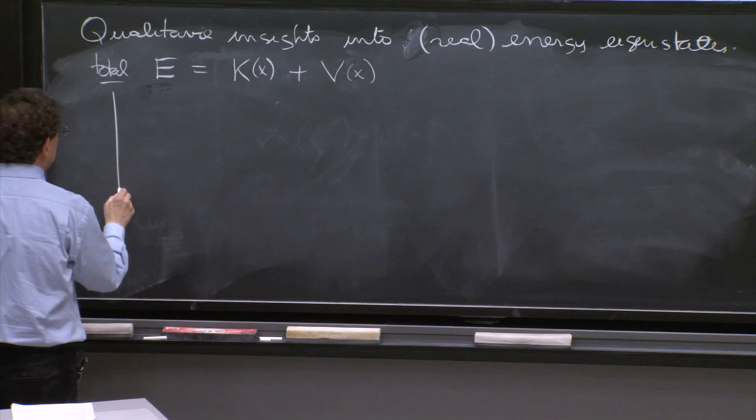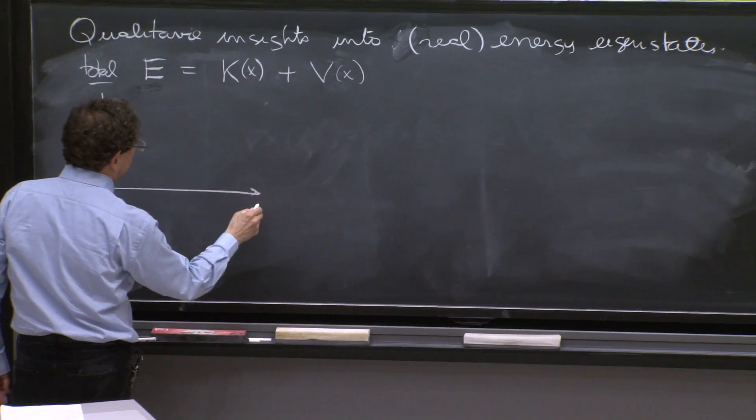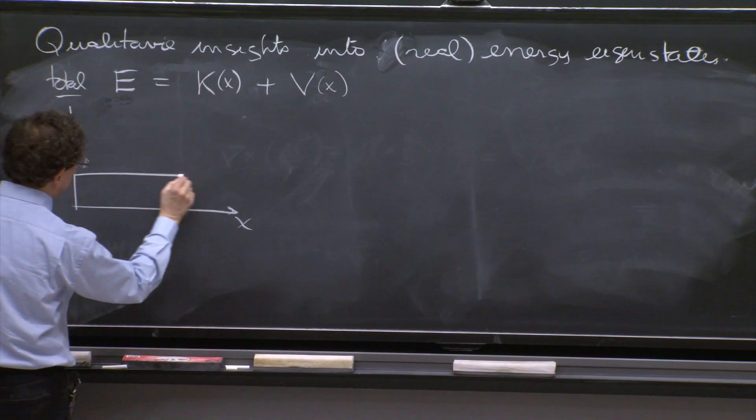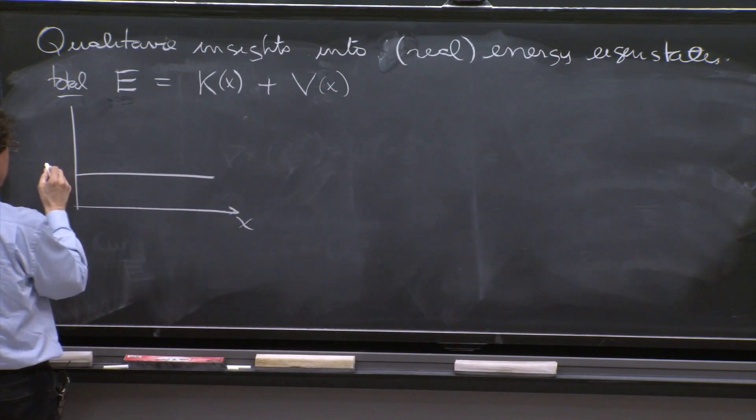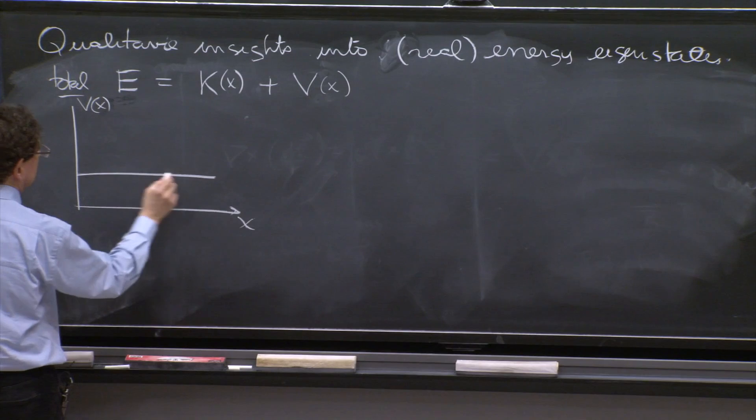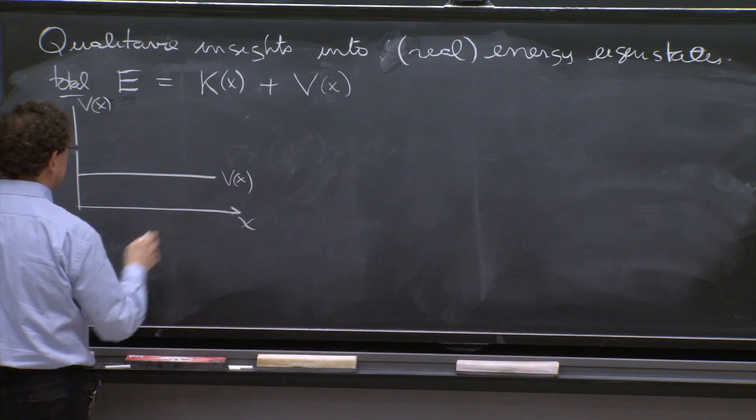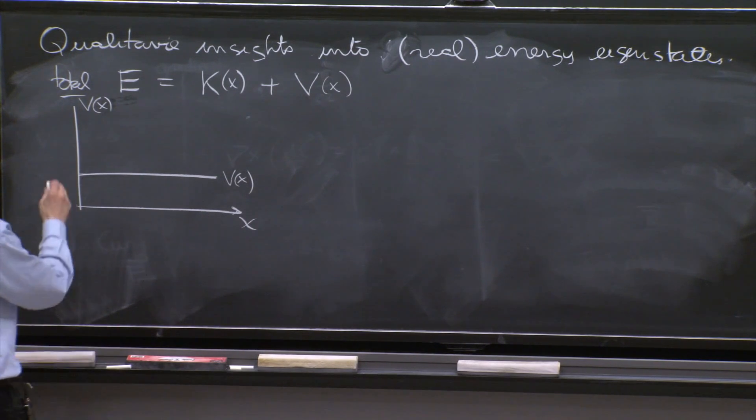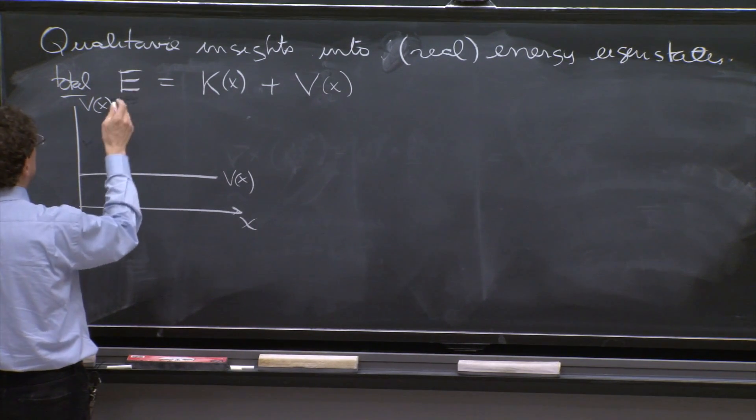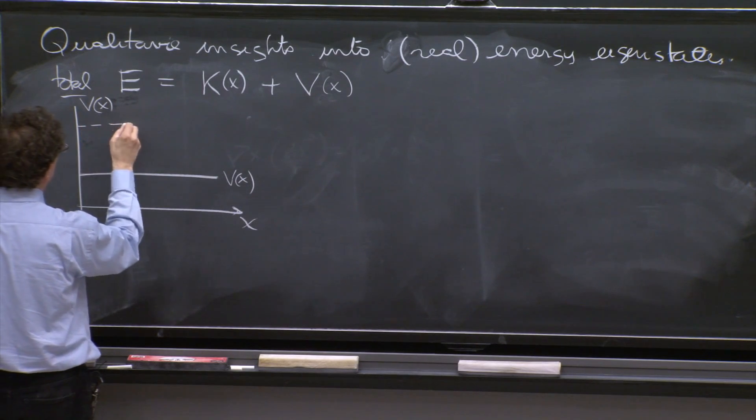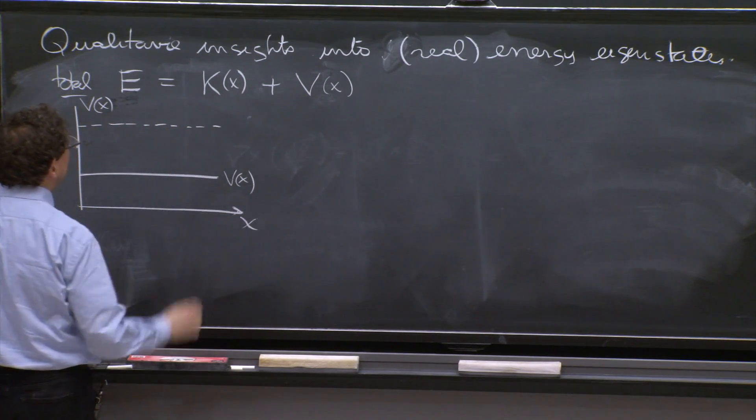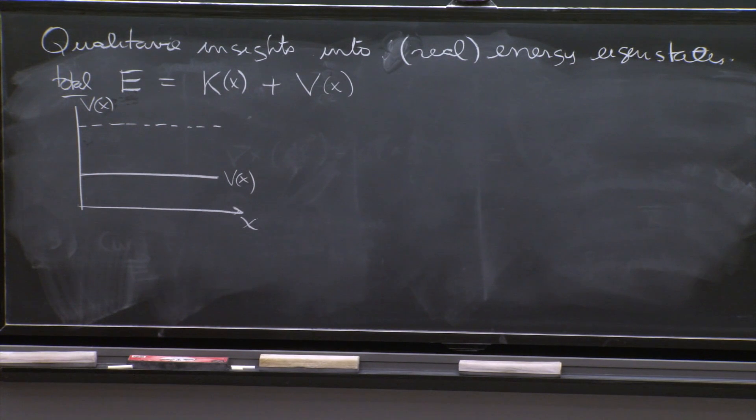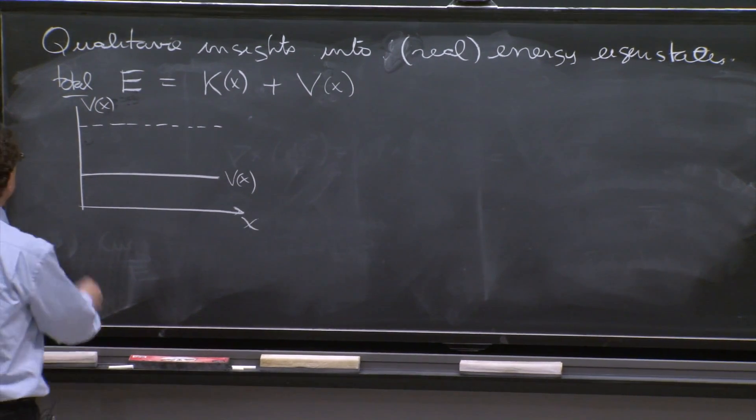Let's do a very simple case. So this is a coordinate x, a potential V of x. Is this the potential, V of x? It's a constant, nothing that complicated. And suppose you have a total energy. Now, the total energy in classical mechanics is conserved. So when I draw a line, I'm not implying that it's a function of x, that sometimes the energy is like that. No, it's just a number there that I fixed. Here is the energy.